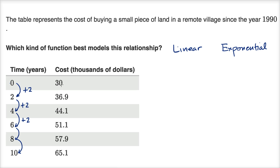Well, let's see what's going on here. Let's just first look at the difference between these numbers. To go from 30 to 36.9, you would have to add 6.9. Now to go from 36.9 to 44.1, what do you have to add? You have to add 7.2.